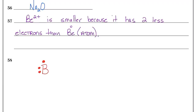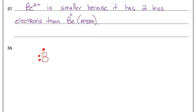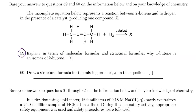Number 59: explain in terms of molecular formulas and structural formulas why 1-butene is an isomer of 2-butene. This is an organic chemistry question. The molecular formula shows exactly how many atoms of each type — for example, water is H₂O. The structural formula shows where atoms are bonded. We care about structural formulas in organic chemistry because structure is king — change the structure and you change the properties.